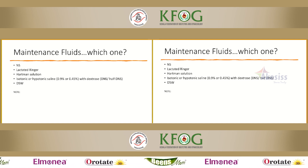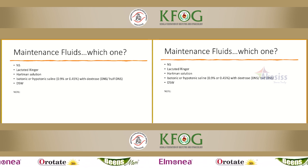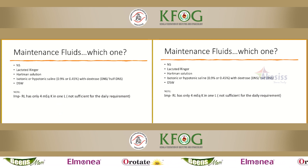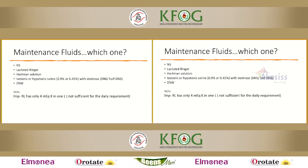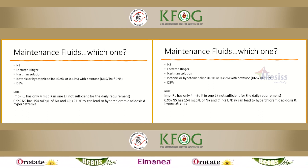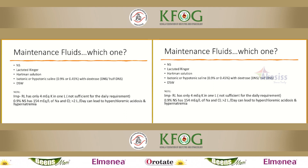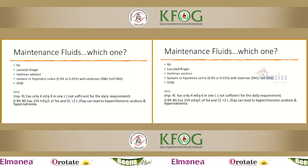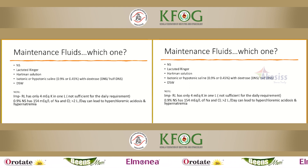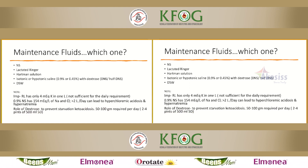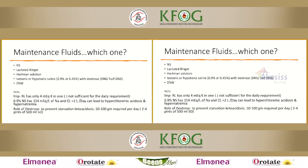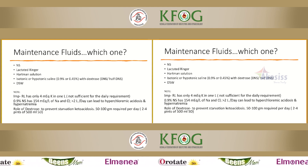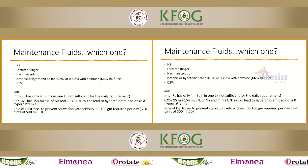Maintenance fluids include normal saline, Ringer's lactate, Hartmann's solution, half-DNS, and D5W. RL contains only 4 mEq/L potassium per liter, which is insufficient for daily requirements. Normal saline has very high sodium and chloride — giving 2 liters can lead to hyperchloremic acidosis and, in compromised renal function, hypernatremia. For dextrose to prevent starvation ketoacidosis, 50–200 grams are required per day, approximately 2–4 pints of 5D, preferably given as half-DNS or DNS.